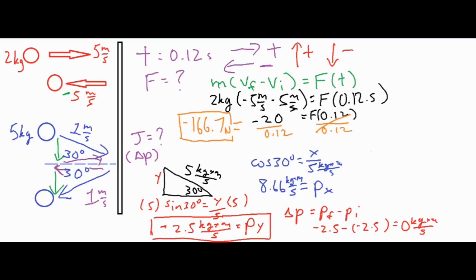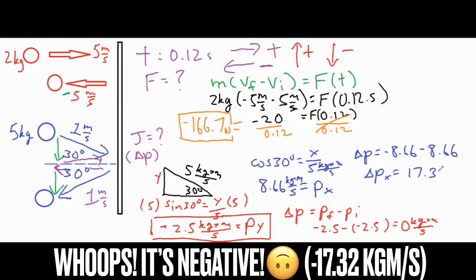For the x-direction it's slightly different, because the incoming x-component points to the right at positive 8.66 and the outgoing x-component points to the left at negative 8.66. The change in momentum, or impulse, in the x-direction is the final value of negative 8.66 minus the initial of positive 8.66, giving a total change in momentum of negative 17.32 kilogram-meters per second.